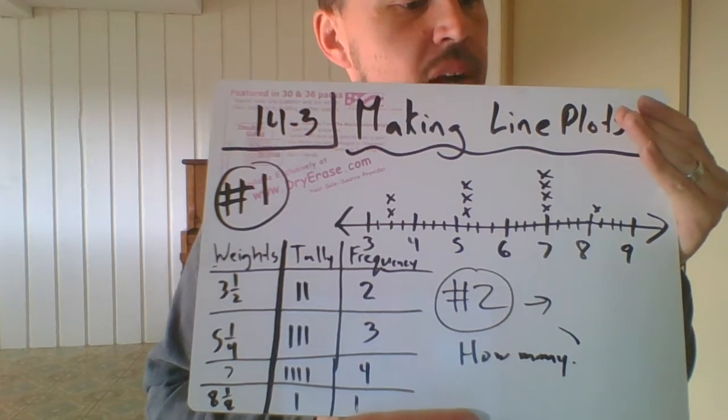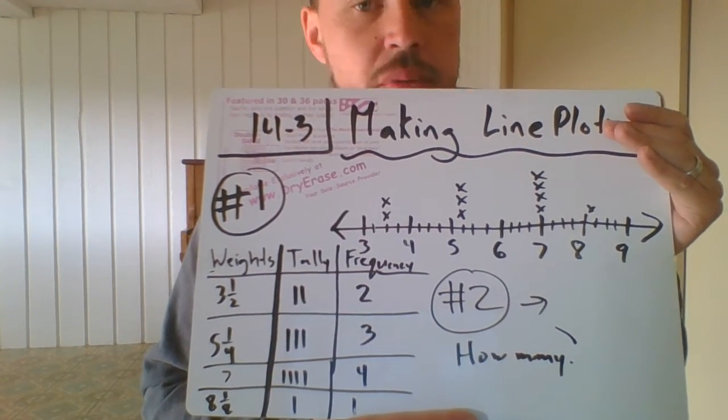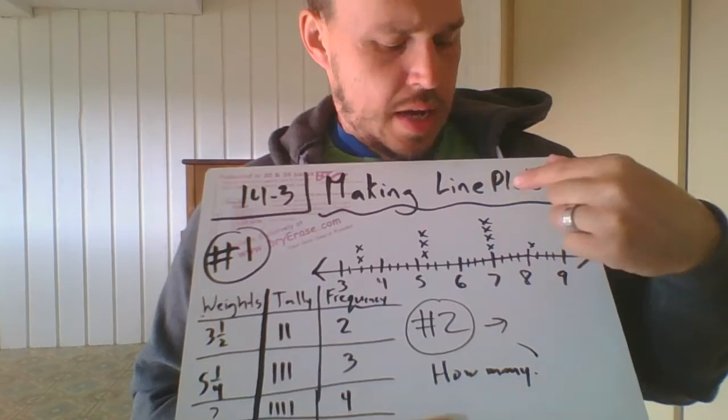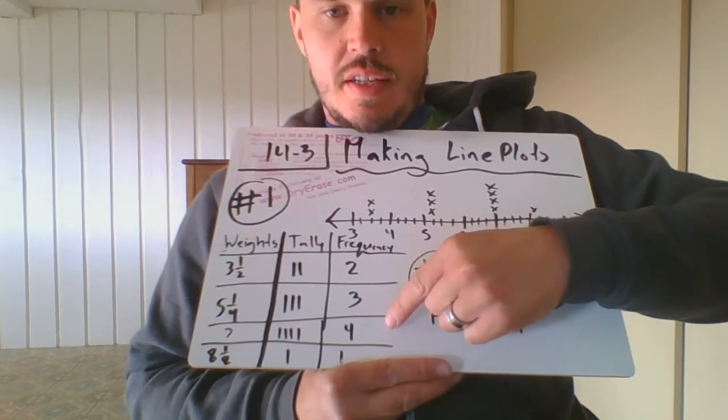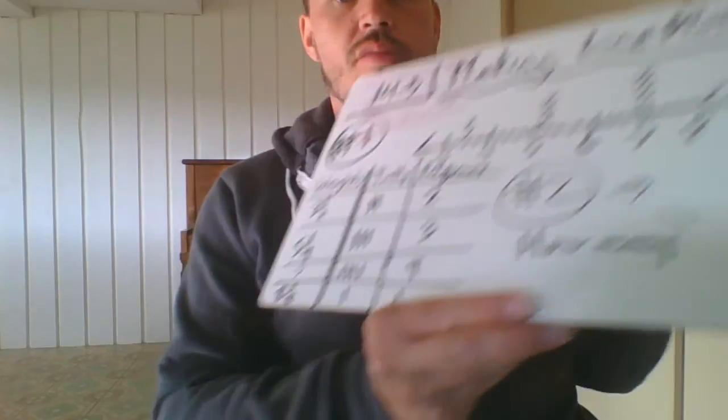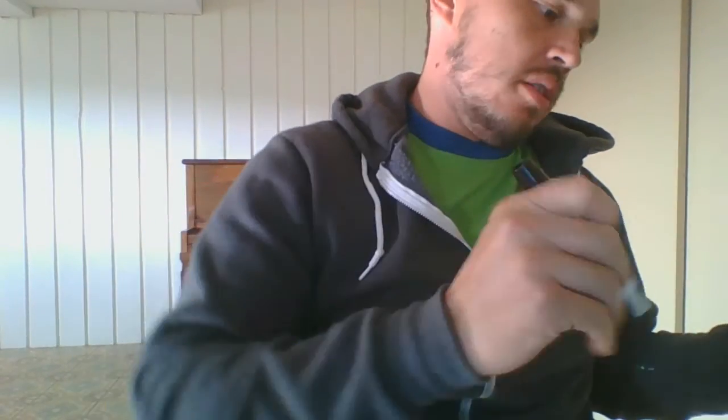Okay, so number two of guided practice is a really easy problem. How many pumpkins are in the crate? You're just going to add up all the numbers. So you do two plus three is five. Five plus four is nine. Nine plus one is ten. It's going to be a total of ten pumpkins in the crate.